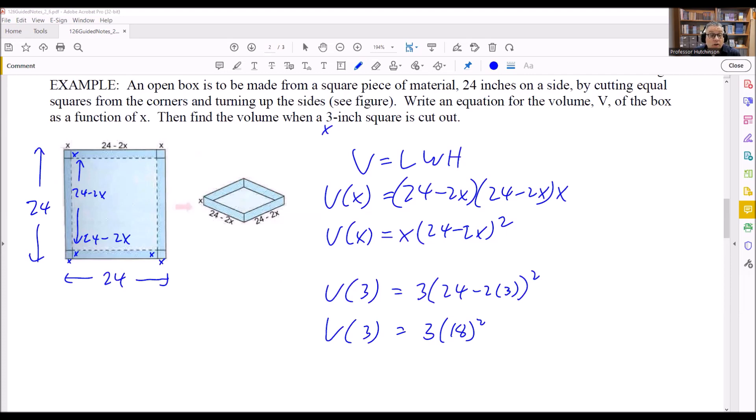So now we need to square that. If we square that, that's going to be 324. So we have 3 times 324. And then the last step would be just to multiply that by 3. And we get our final answer of it's going to be 972.